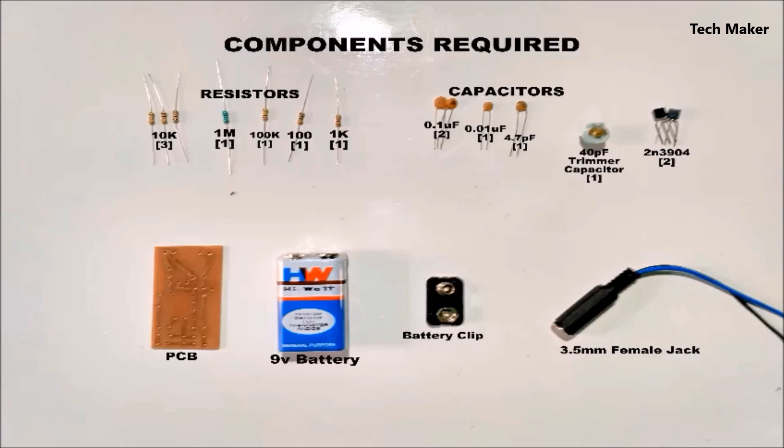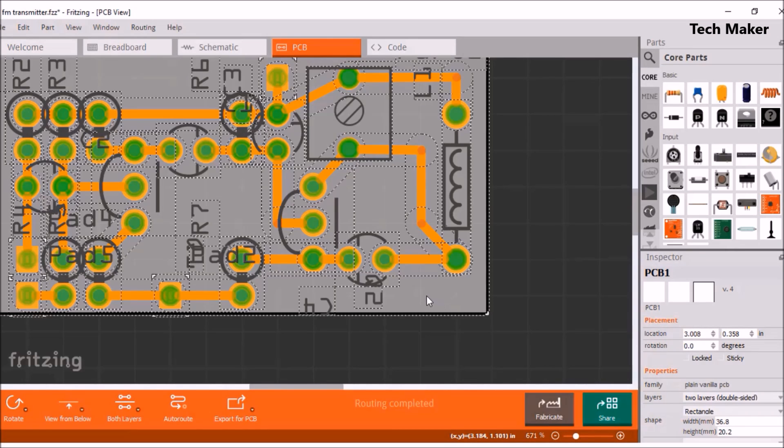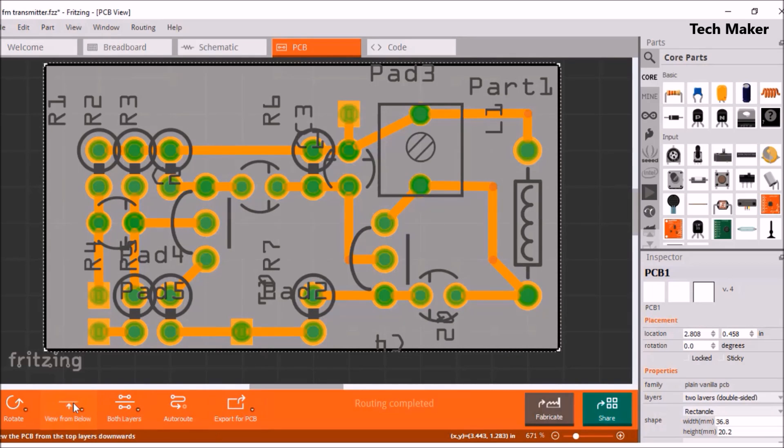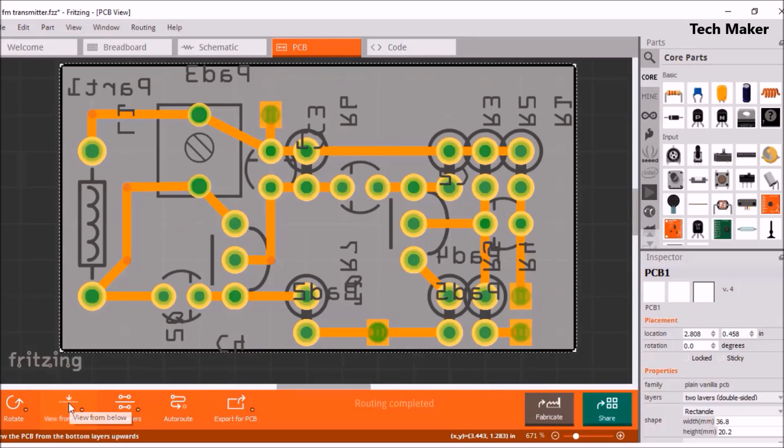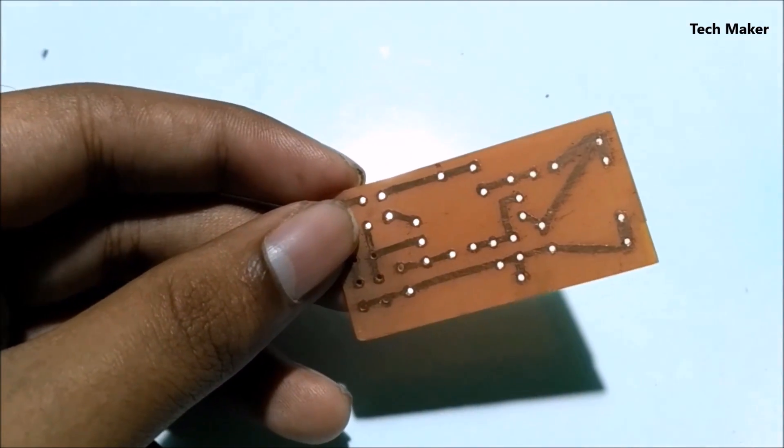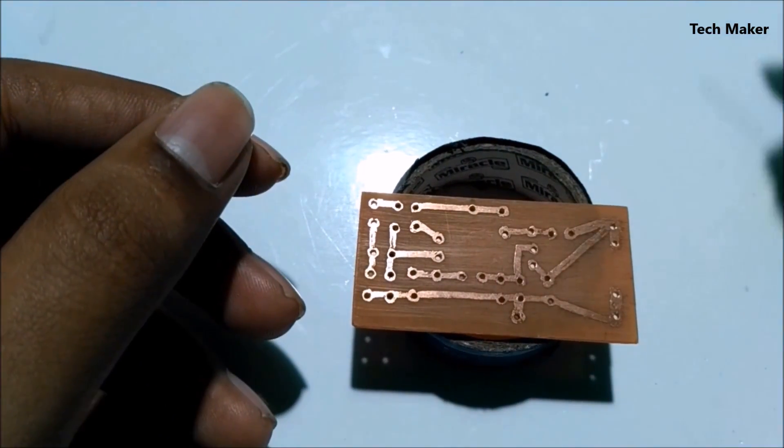I designed this custom PCB layout using Fritzing software. You can download the PDF file from the link in the description. This is the PCB I designed. To know how to make a PCB, check the link in the description.